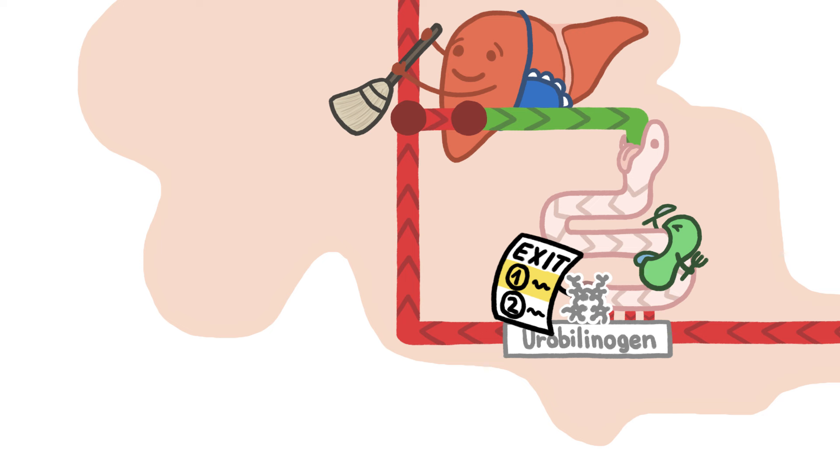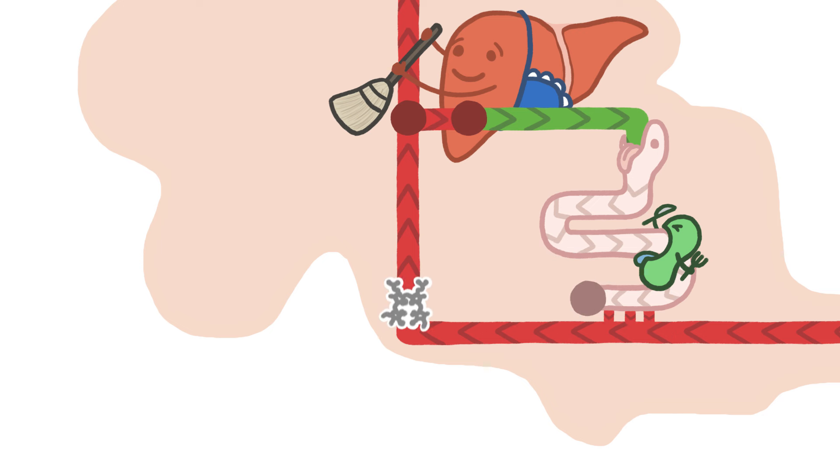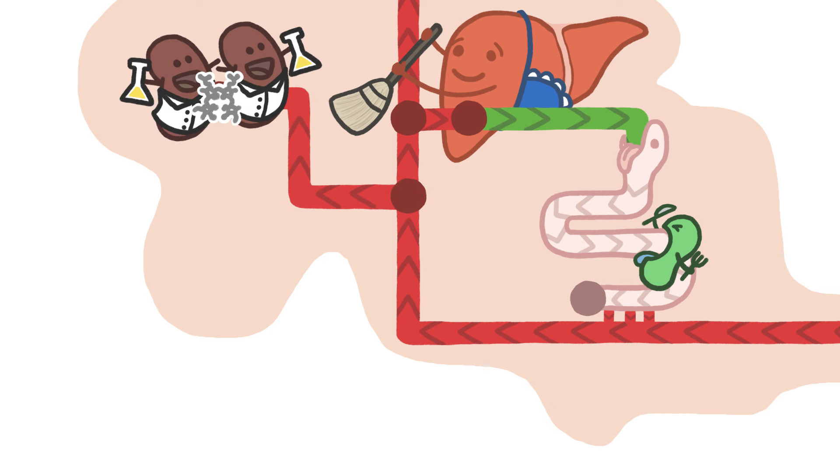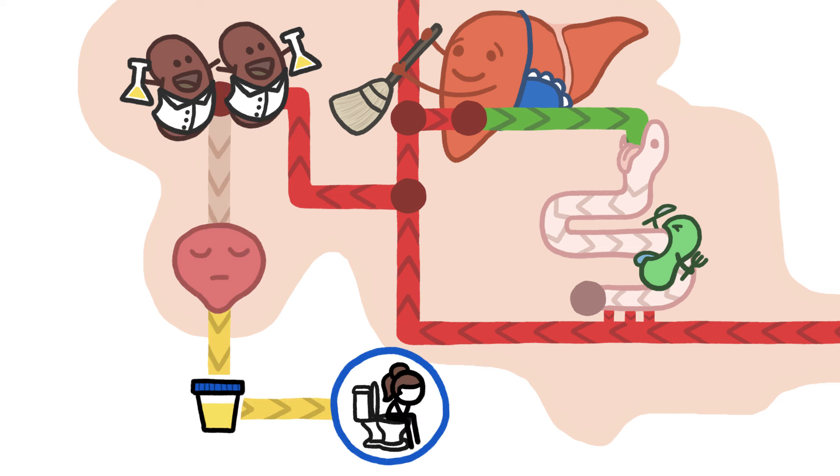In route number one, urobilinogen first gets treated just like bilirubin and put back into the bloodstream. But from there, it gets slurped up by the kidneys, which recognize it as trash and process it accordingly into a molecule that happens to be yellow, before passing it along to the bladder, which passes it along to the toilet, or to wherever.